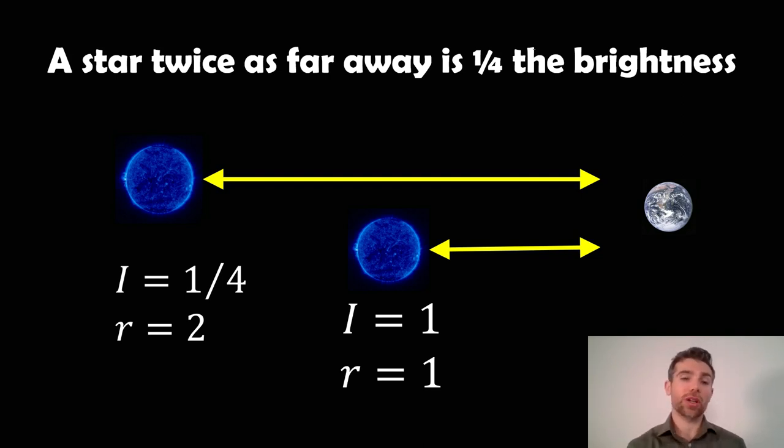So if you double the distance, you quarter the brightness. That's the relationship there. We know that it drops off with that sort of relationship, so we can work out our distance.